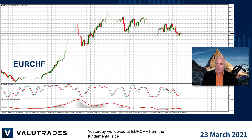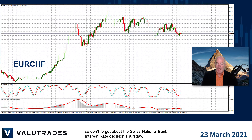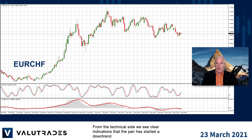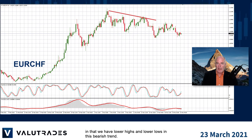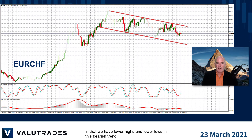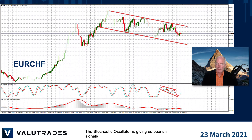Yesterday we looked at Euro Swiss from the fundamental side, so don't forget about the Swiss National Bank interest rate decision Thursday. From the technical side, we see clear indications that the pair has started a downtrend with lower highs and lower lows in this bearish trend. The stochastic oscillator is giving us bearish signals and MACD has passed from overbought to oversold.